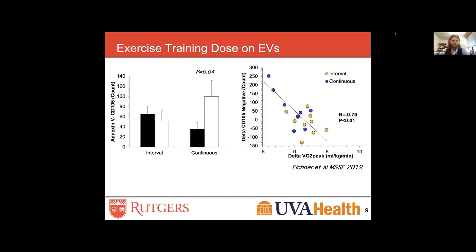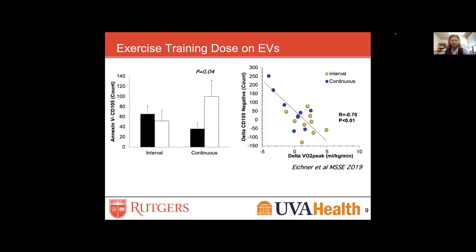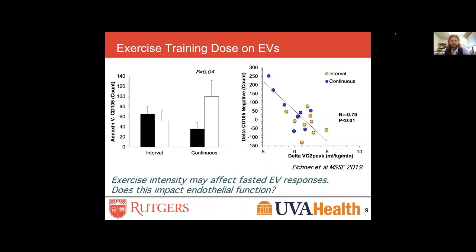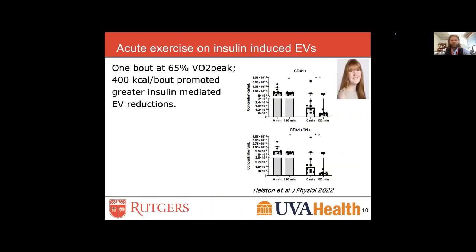This is some data we published. When we looked at high-intensity interval training in older adults with prediabetes, we found that one marker of endothelial cells went down, whereas continuous exercise caused quite a robust increase in these EVs. We found this was directly correlated with gains in insulin sensitivity and fitness levels. This promoted an idea that exercise intensity may affect EV responses, but more work is needed on how it can impact the endothelium.